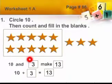These are 3 stars, so first we will write here 3. So 10 and 3. Now you start your count on 10. After 10, 11, 12, 13. So we have 10 and 3 make 13. With the sign of addition, you have to write 10 plus 3 equals to 13.